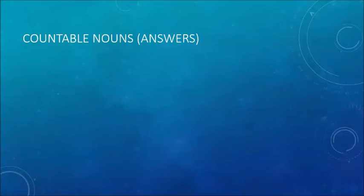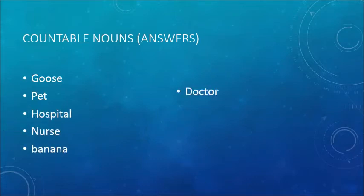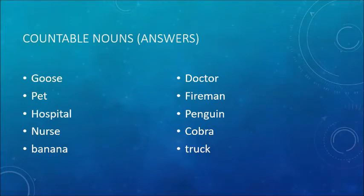Now let's do it together and see which words are countable and which are uncountable. The countable nouns from the list are: goose, pet, hospital, nurse, banana, doctor, fireman, penguin, cobra, truck. As you can see, all these things are very easily countable — we can count them in numbers like 1, 2, 3 or 100. That's why they are called countable nouns.